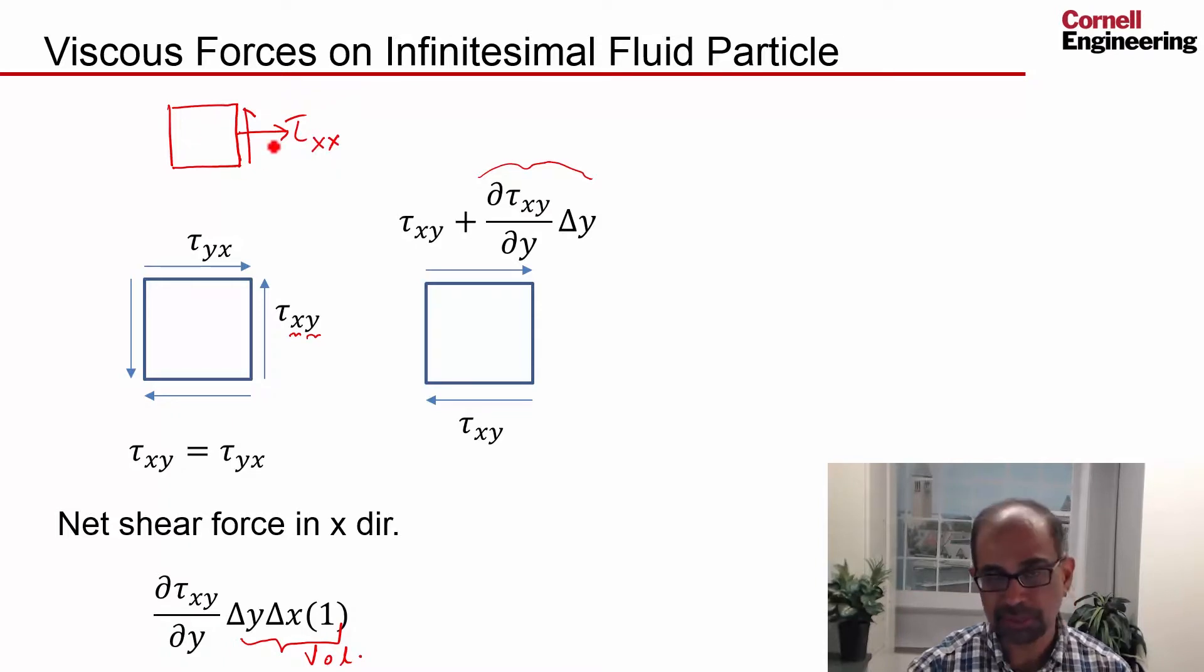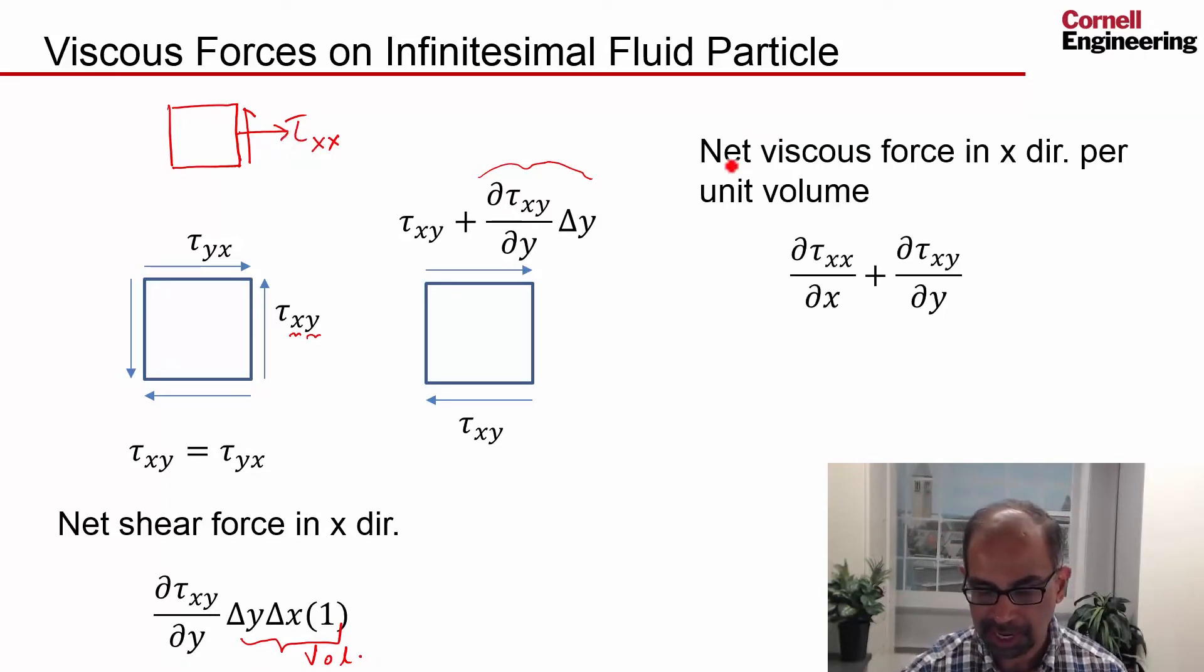And you can do a similar business and work out that the net normal viscous force per unit volume is given by the gradient of this in the x direction. And I can put it together and get the net viscous force in the x direction per unit volume. So that's the contribution from the normal force, and that's the contribution from the shear force. This one we saw over here, and this is a corresponding tau.